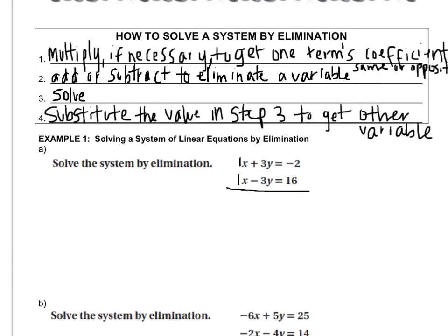If I subtract, I'll have one x minus one x and those will cancel. This is just an example where luckily both operations work, so you just pick one. But usually it will just happen where one of them cancels. So I'm going to add because addition is always simpler than subtraction. So I'll get one x plus one x, which is two x. Positive three plus negative three cancel, and negative two plus sixteen is fourteen.